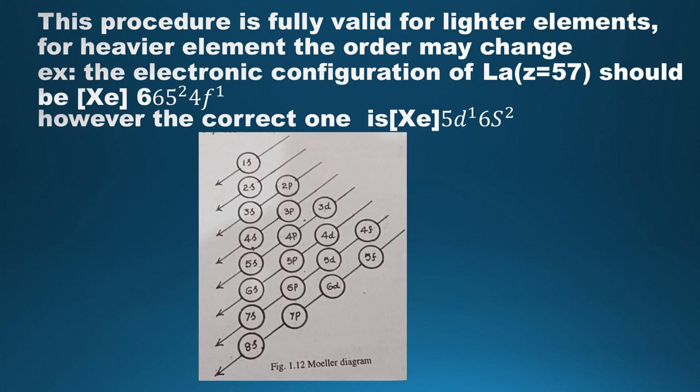The sequence continues as: after 2p comes 3s, then 3p, then 4s, and so on, as shown by the arrows in the diagram. This procedure is fully valid for lighter elements; for heavier elements the order may change. For example, lanthanum (La, atomic number 57) would be expected to have the configuration [Xe] 6s² 4f¹, however the correct electronic configuration of lanthanum is [Xe] 5d¹ 6s². Thus the diagram should be used only as a guideline, keeping in mind the possible changes that can occur in heavy elements. Thank you, children.